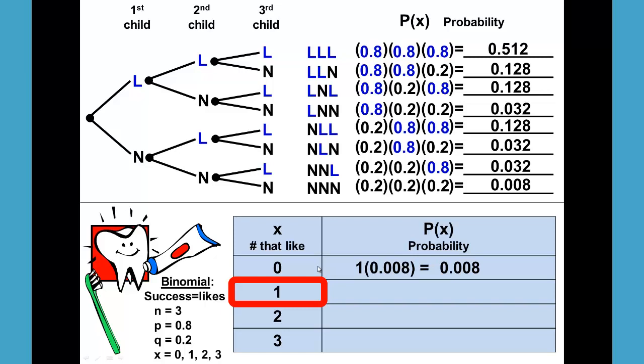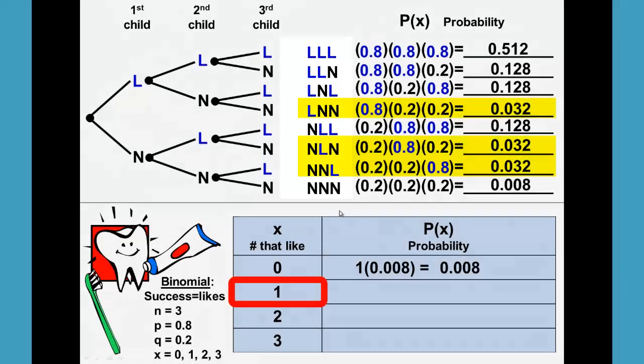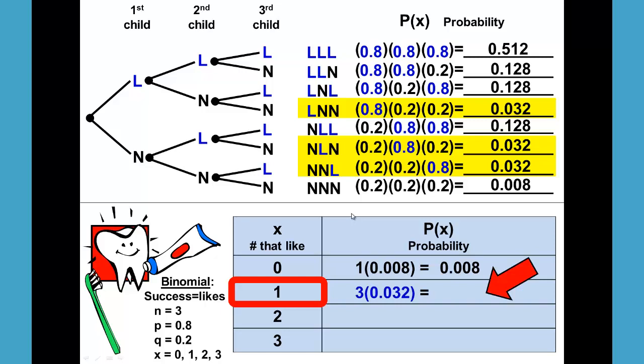We have that one of the children like the toothpaste so we're looking for one L in our setups here and that would be these three that are highlighted. All of those probabilities are the same at 0.032 and since there are three of those we multiply 3 times 0.032 to get 0.096.